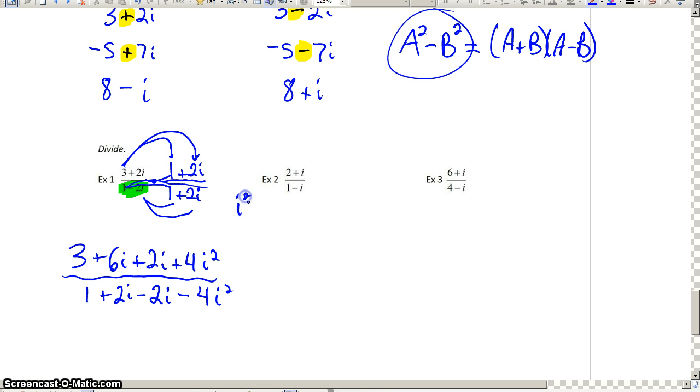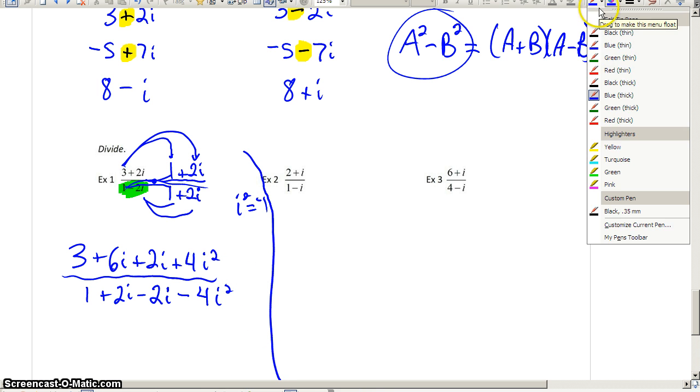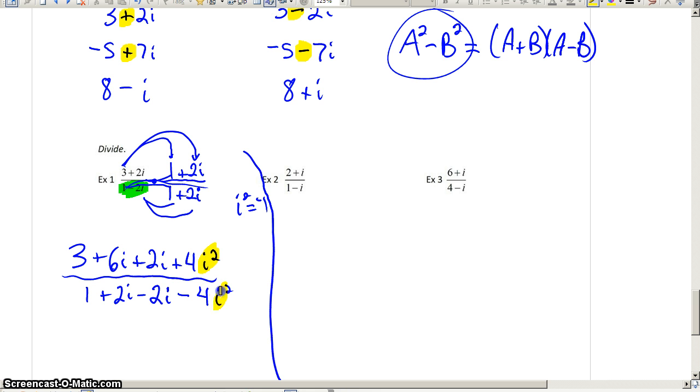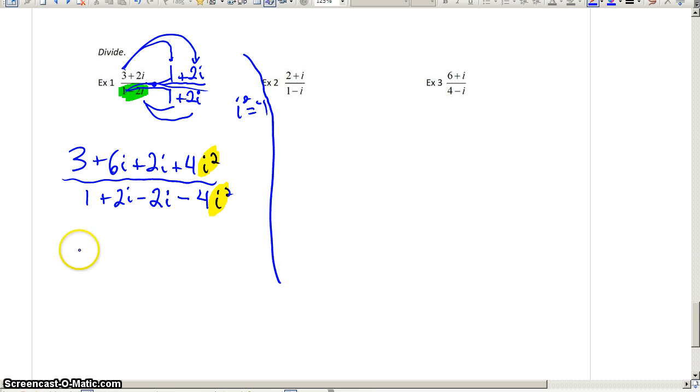But remember that i squared is equal to negative 1. If we remember that, we're going to have to come up to these expressions and say, these i squareds, we're going to convert to negative 1. And in so doing, what you'll have then is 3 plus 6i plus 2i plus 4 times negative 1. Down below, we've got 1 plus 2i minus 2i minus 4 times negative 1.